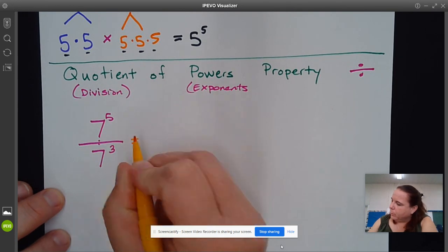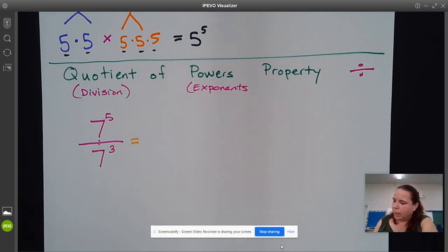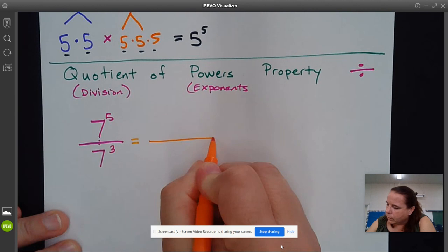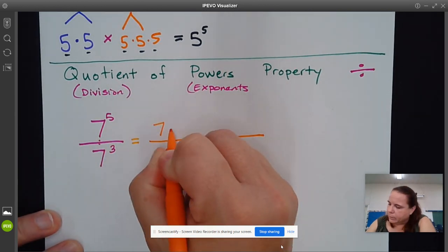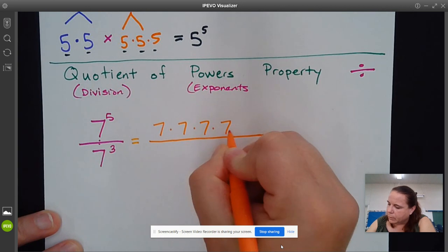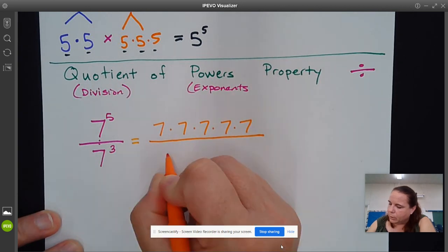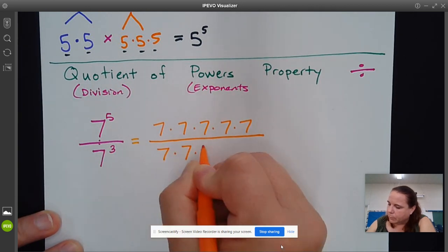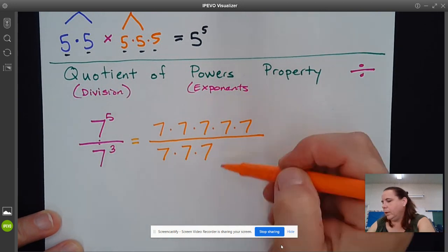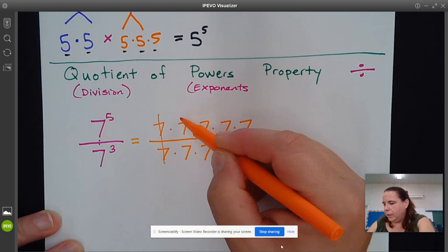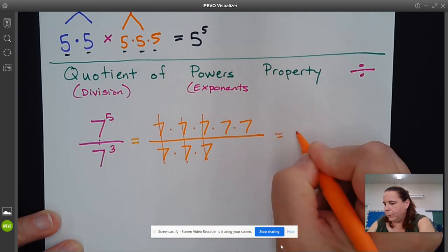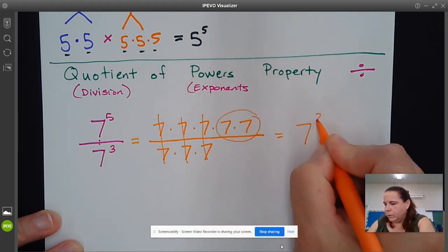I want you to remember the rule, but I also want you to know why the rule exists. So we're going to take 7^5, which is 7×7×7×7, and 7^3 is 7×7×7. You can see that these are going to cancel out, and you're left with 7^2.